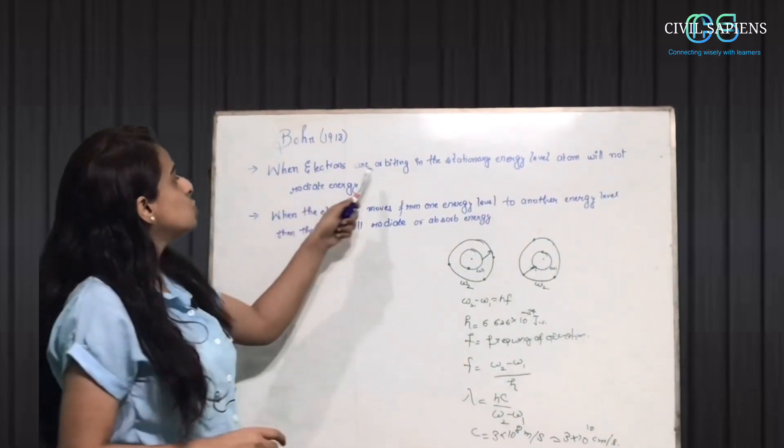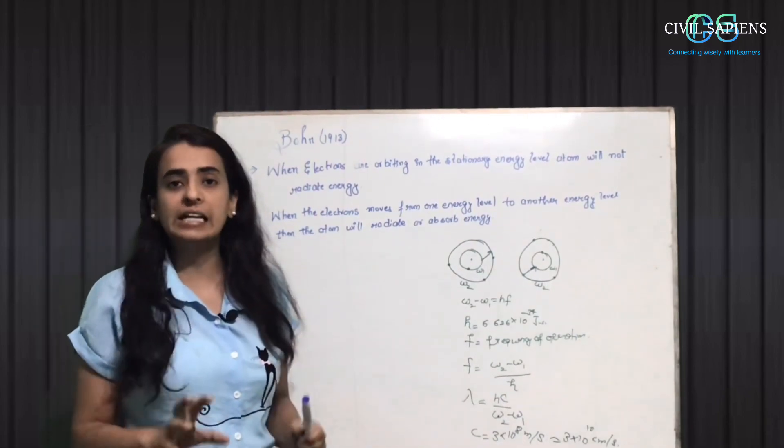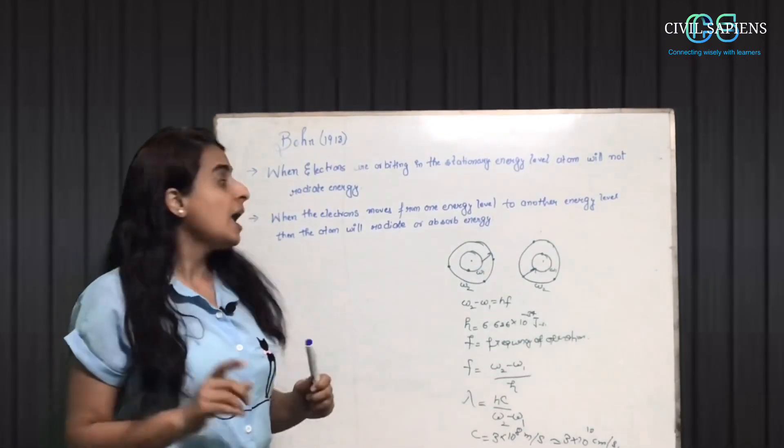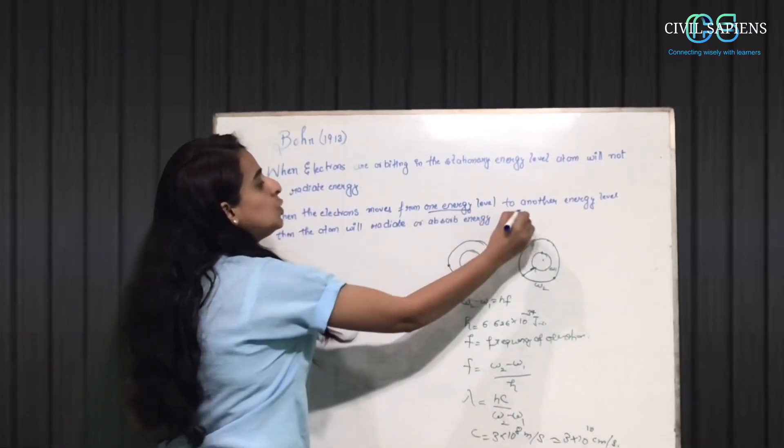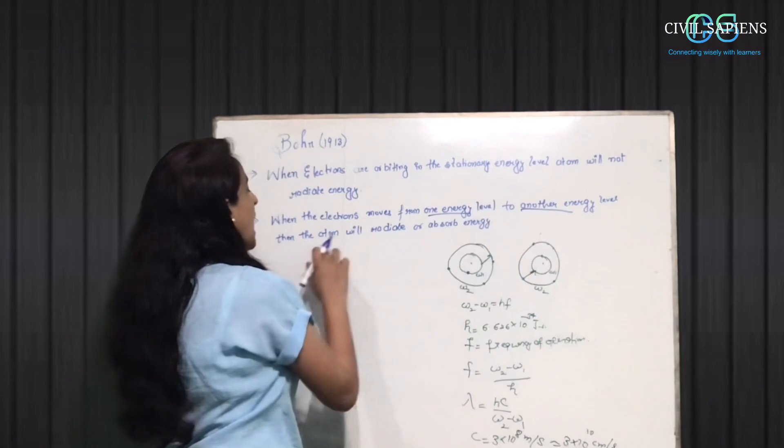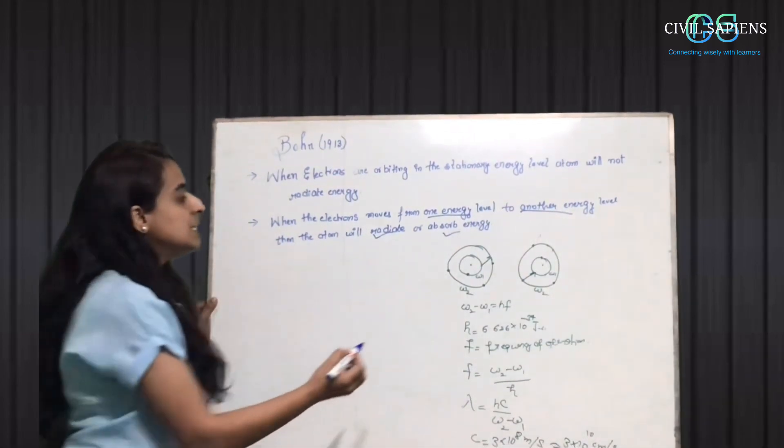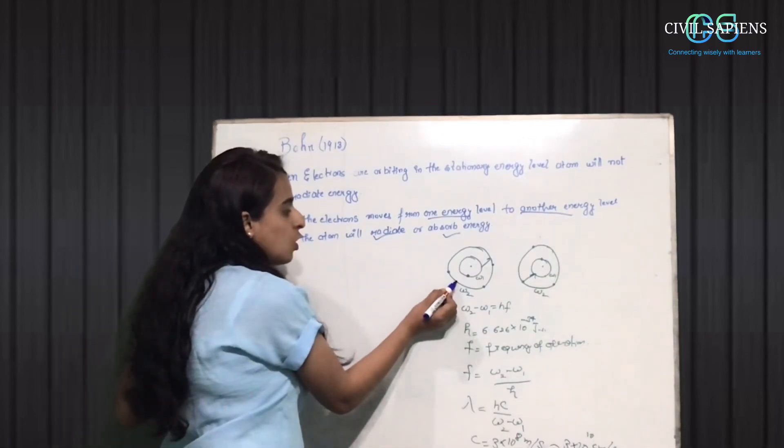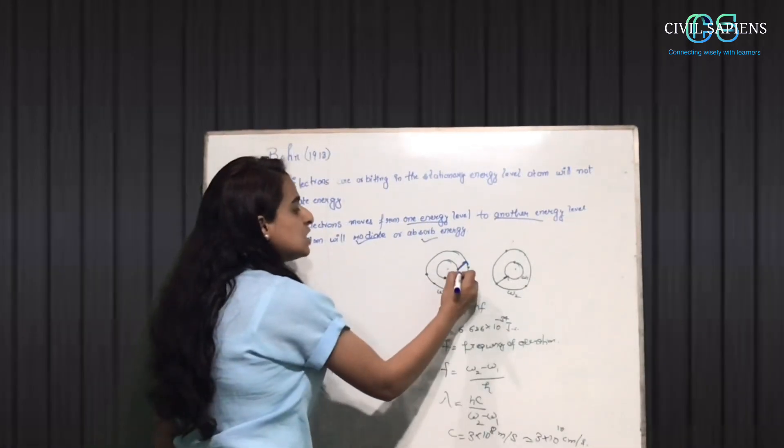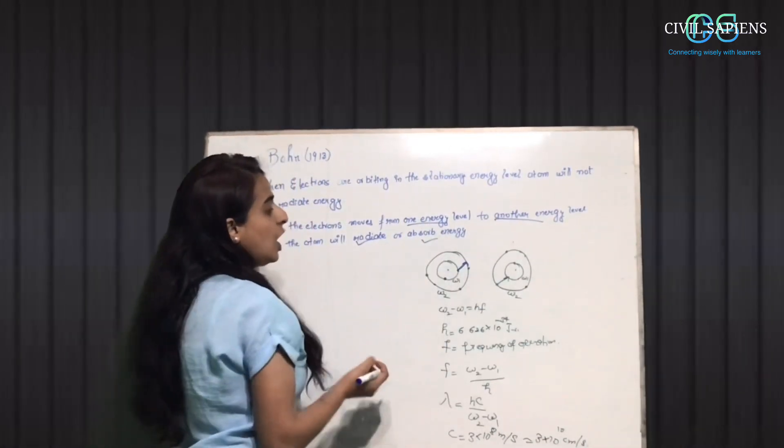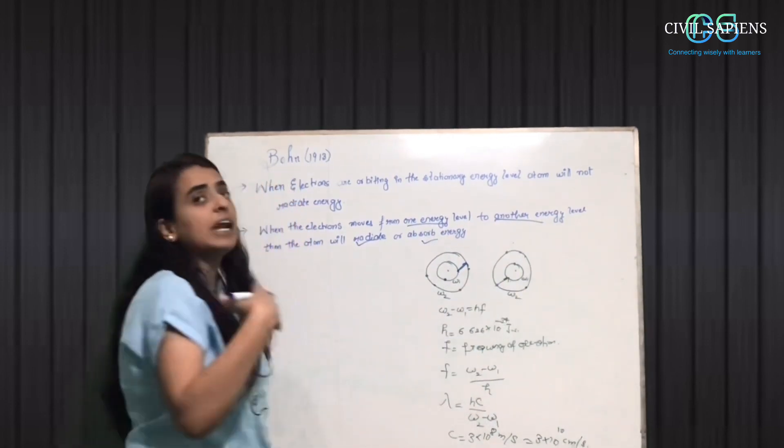When the electrons are stationary at the energy level, the atoms do not radiate or absorb energy. When the electrons move from one energy level to another energy level, the atoms radiate or absorb energy. When electrons move from lower energy level to higher energy level, they absorb energy. And when they move from higher energy level to lower energy level, they will radiate energy.